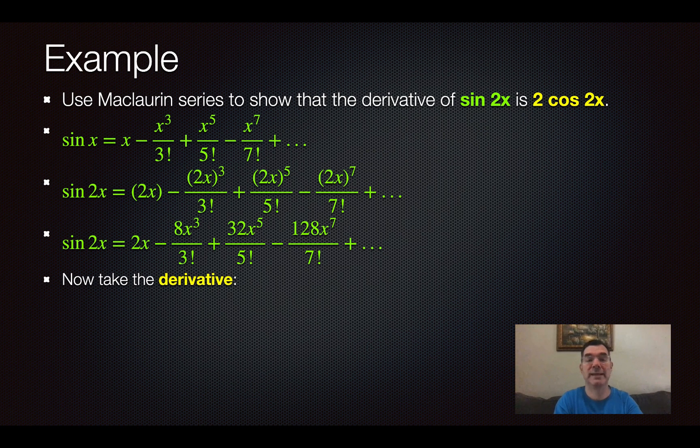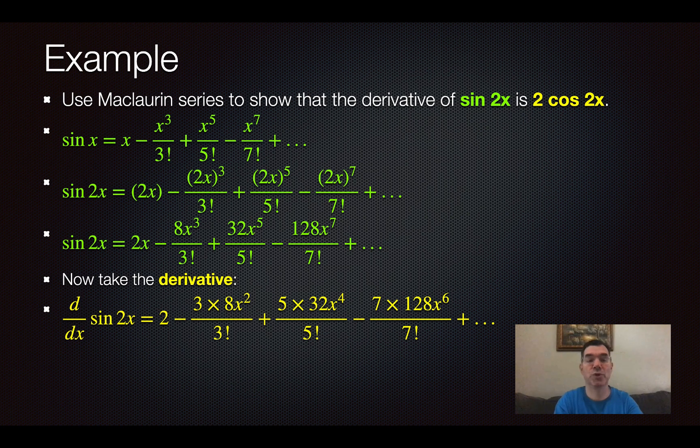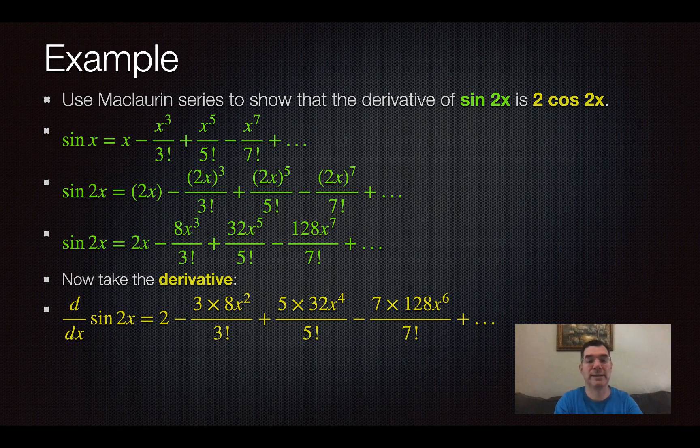So now if I take the derivative of this, there's really nothing complicated about that series. So I'm just taking the derivative term by term. The derivative of 2x would just be 2. The derivative of 8x³ would be 3 times 8x², which I didn't really simplify. I just wanted you to see the process. I'm multiplying by the old exponent and then lowering the exponent by 1 to get the derivative.